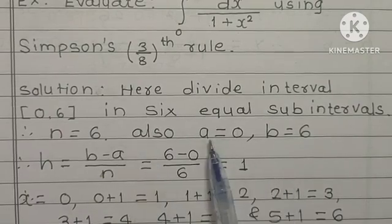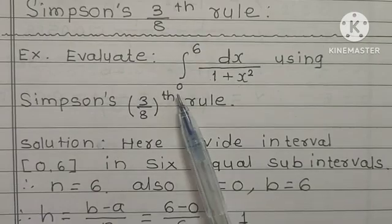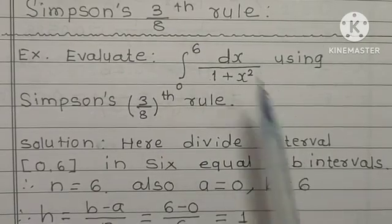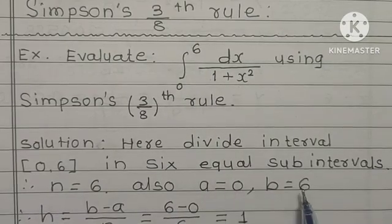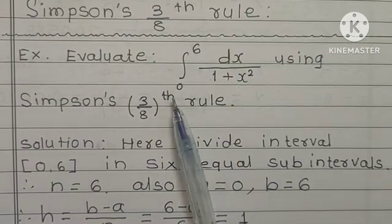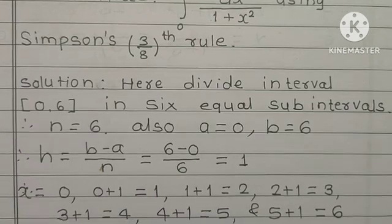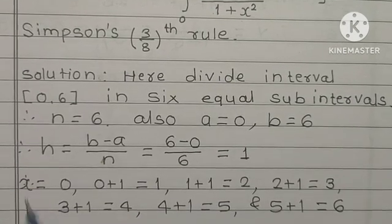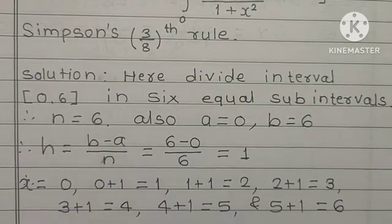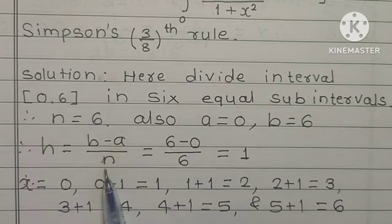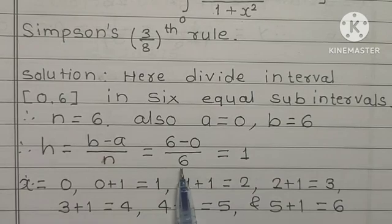Also, A and B are given. Lower limit A is 0, upper limit 6 is B. So A is equal to 0 and B is equal to 6. Now we have to find H. H is given by B minus A upon N. You have B, A and N. Substitute: B is equal to 6, A is equal to 0, N is equal to 6.